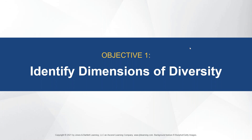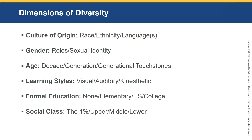We're going to address objective one first: identify dimensions of diversity. When we talk about diversity, quite often what leaps to people's minds is culture of origin, race, ethnicity, language, and maybe gender roles and sexual identity. But there are many more dimensions of diversity than just those. When we talk about age, what decade is someone from? What generation? What are the generational touchstones? They're different for all of us across the generations.